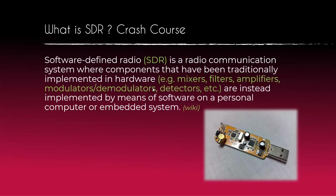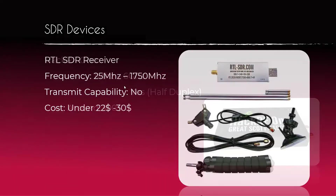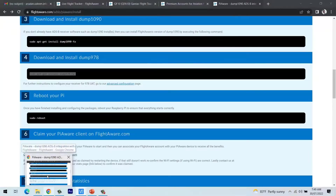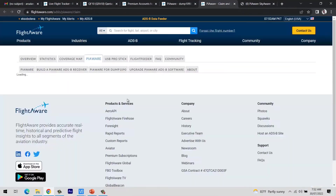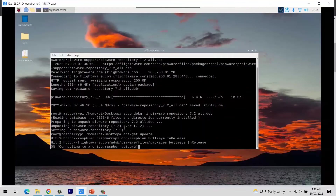Then we will do a crash course of SDR for those who haven't watched our previous courses, so they can understand the basics of SDR. After that we will move to our first project in which we will create PiAware with Raspberry Pi. PiAware is a system in which you can track all types of planes within your vicinity.